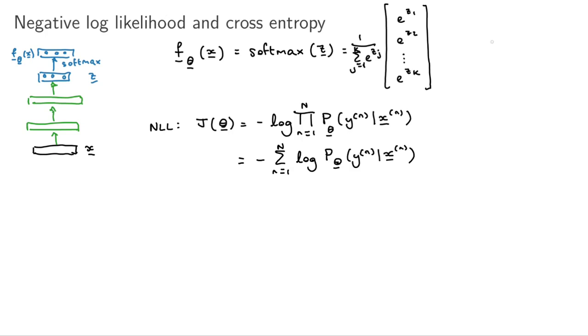This probability is given by the output of the model at that index. We can write that in more than one way, but let's say that we represent the ground truth label of the input X as a vector. Specifically, it's a one-hot vector which has zeros everywhere except for the one position that corresponds to this class.